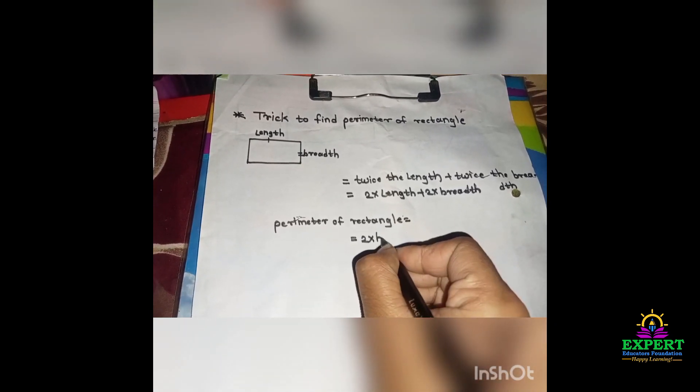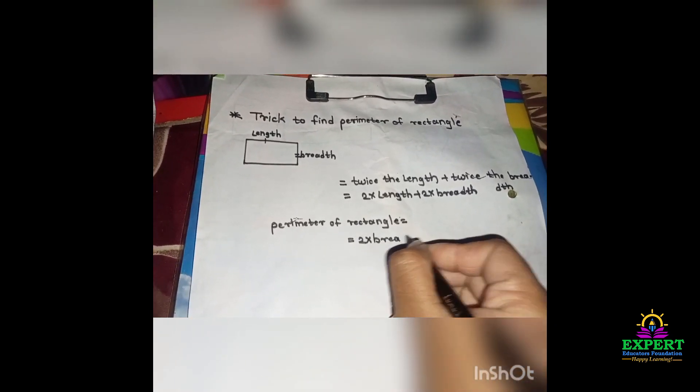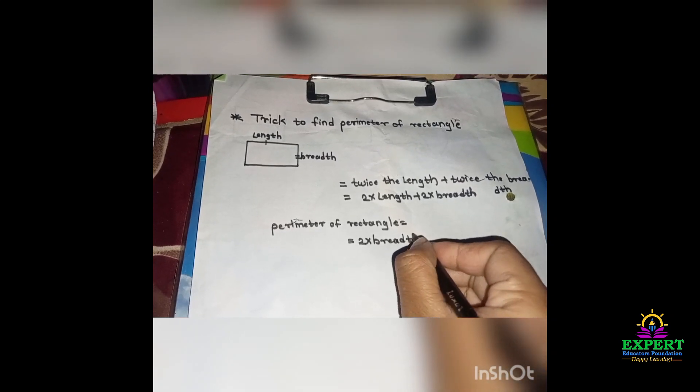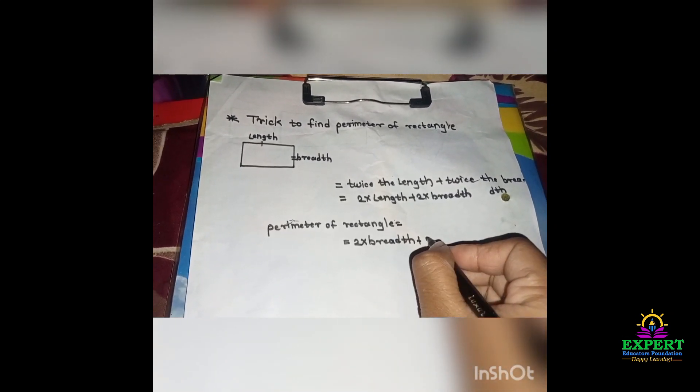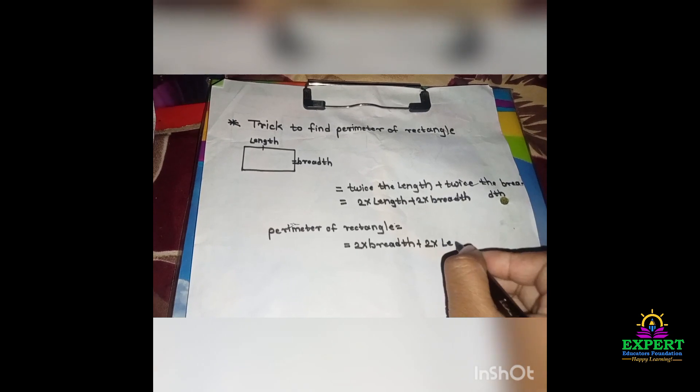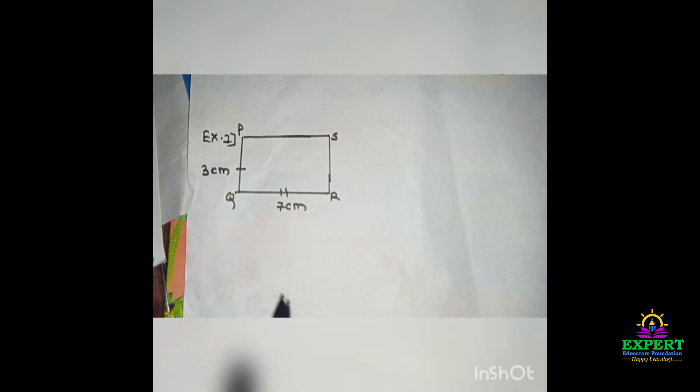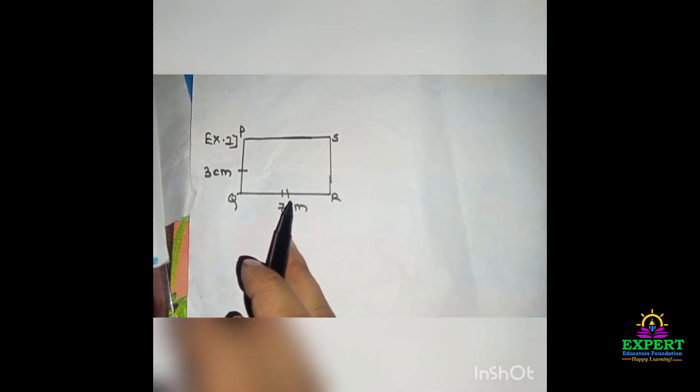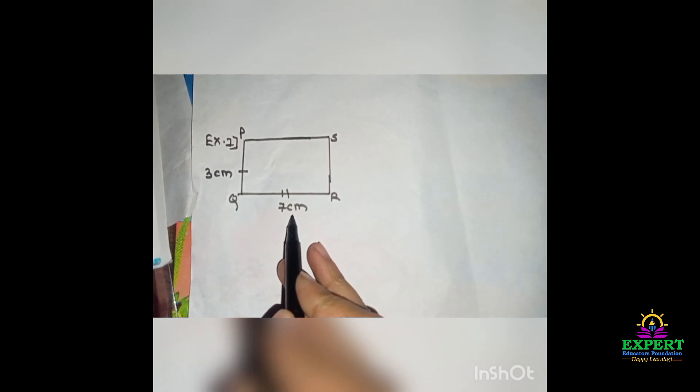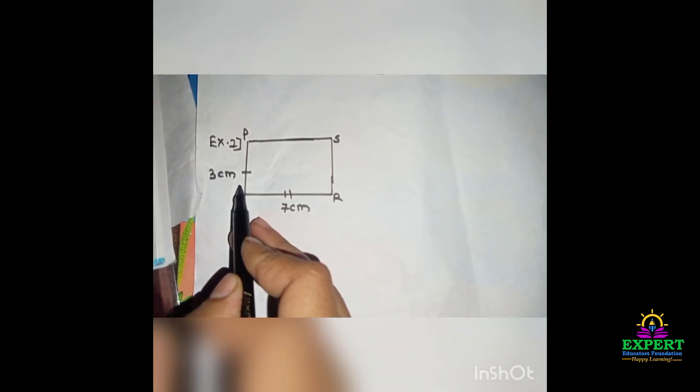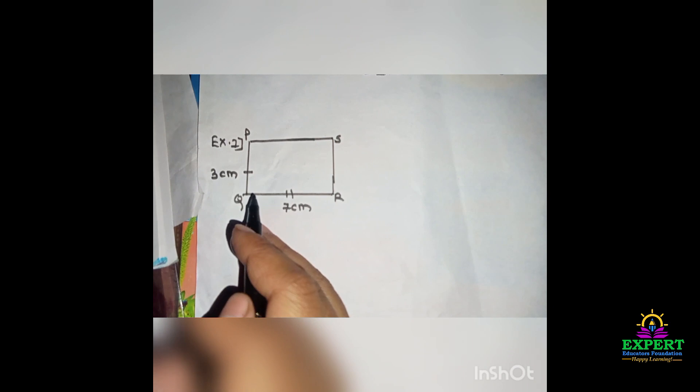2 into breadth plus 2 into length. Now let's solve this example. The length of the rectangle below is 7 centimeters and the breadth is 3 centimeters. Let's find its perimeter.